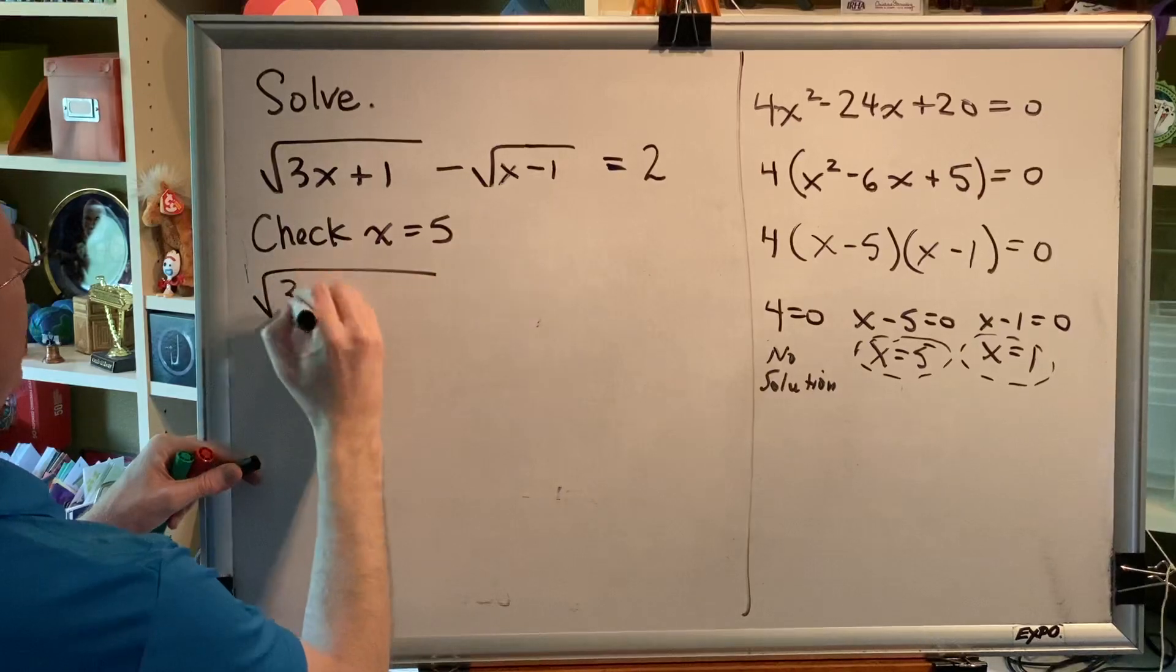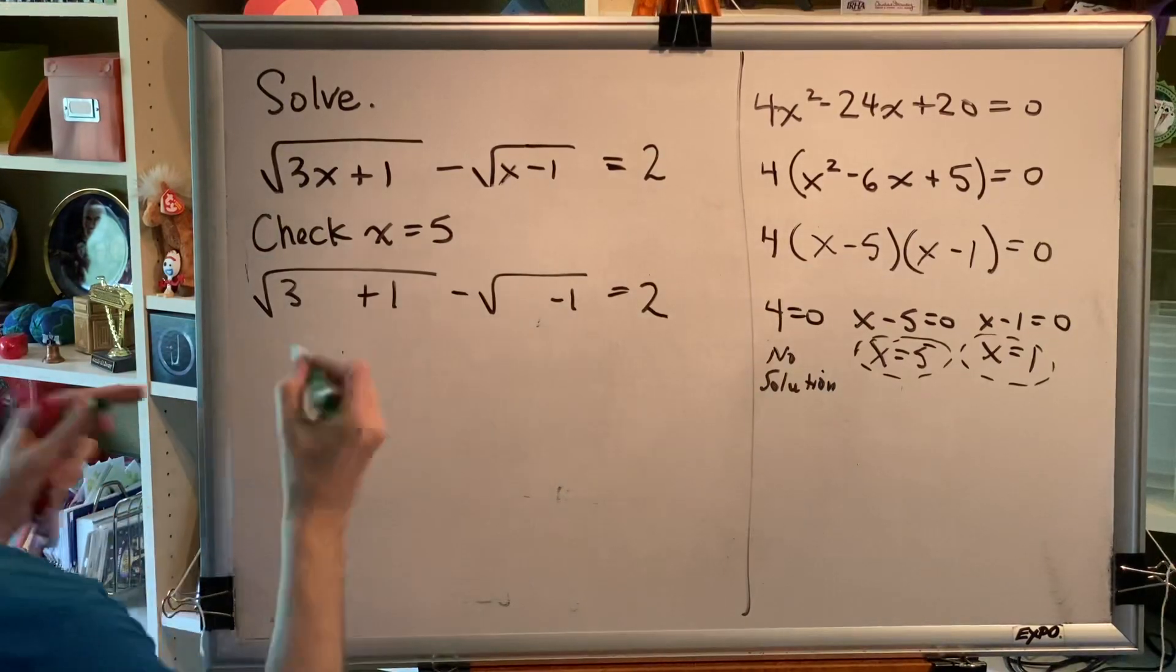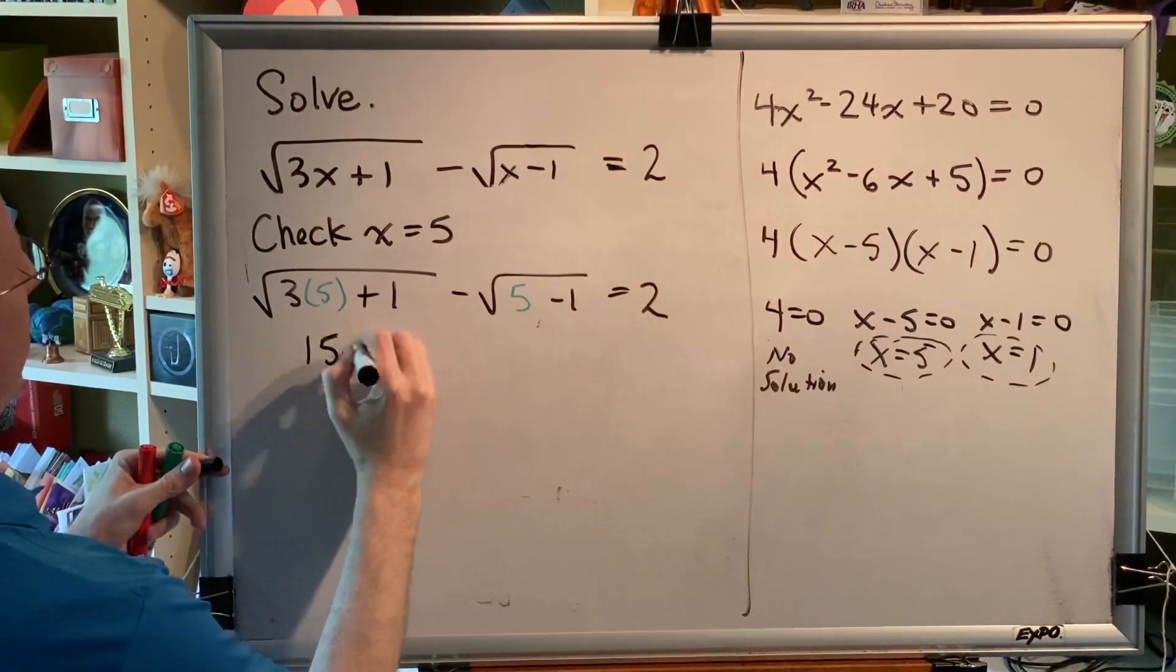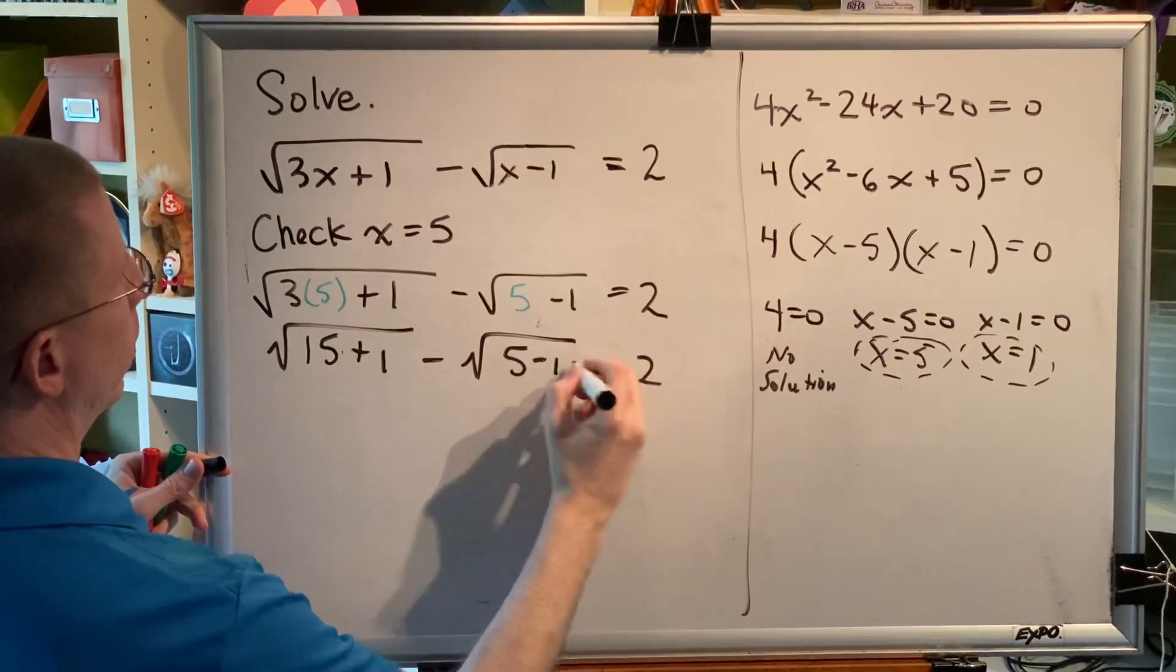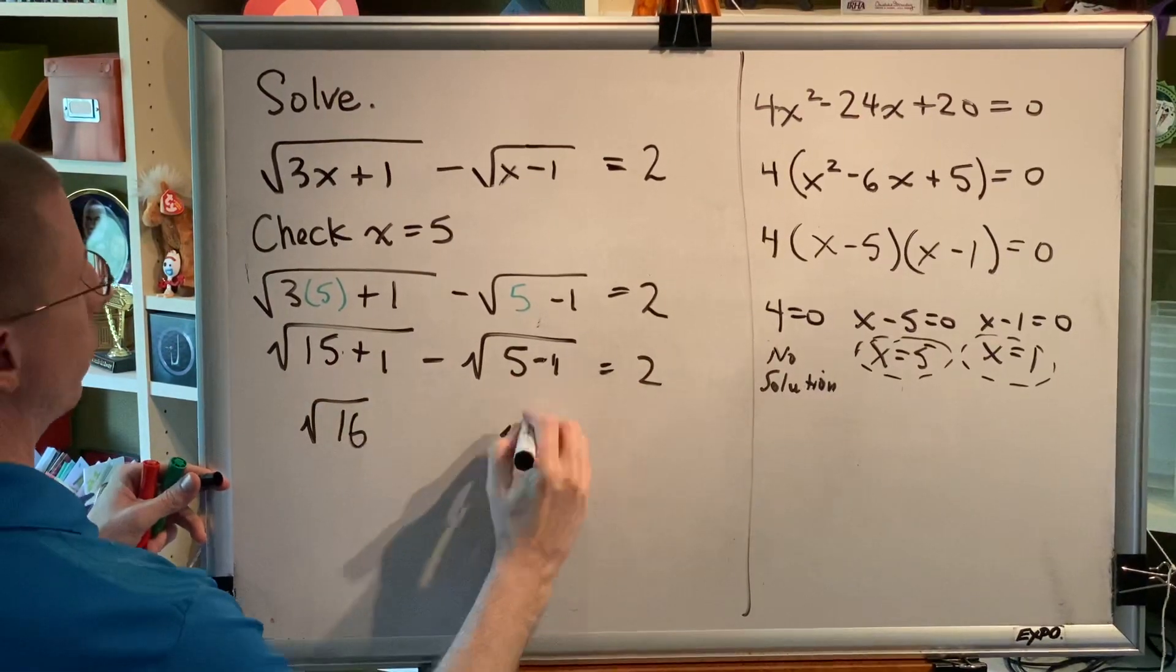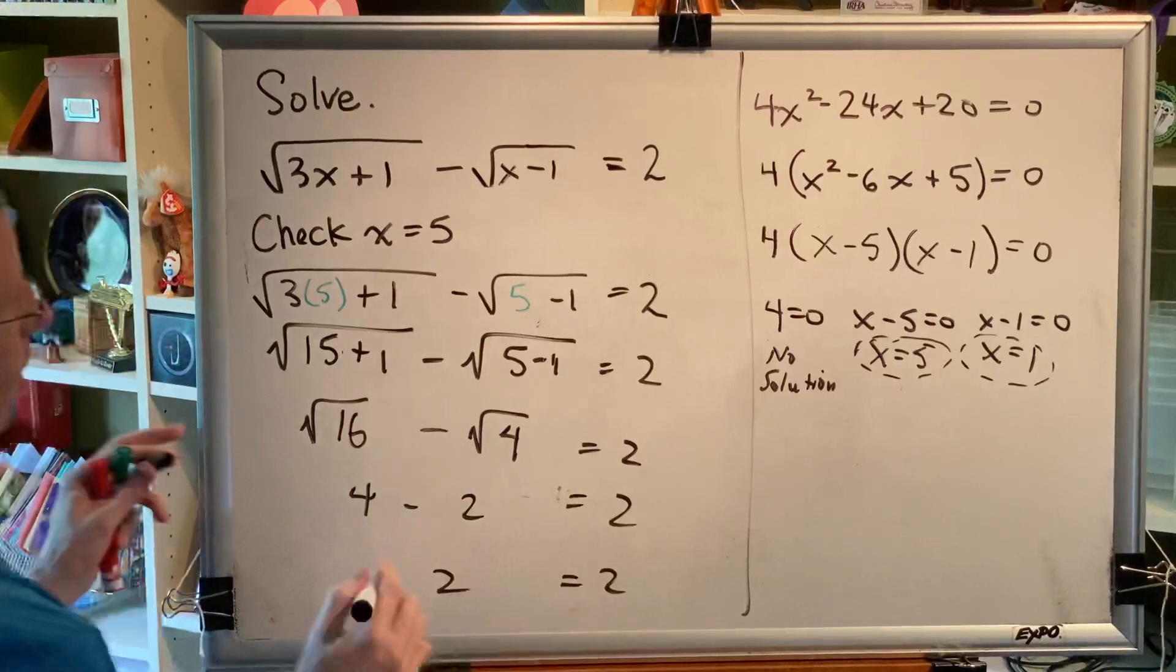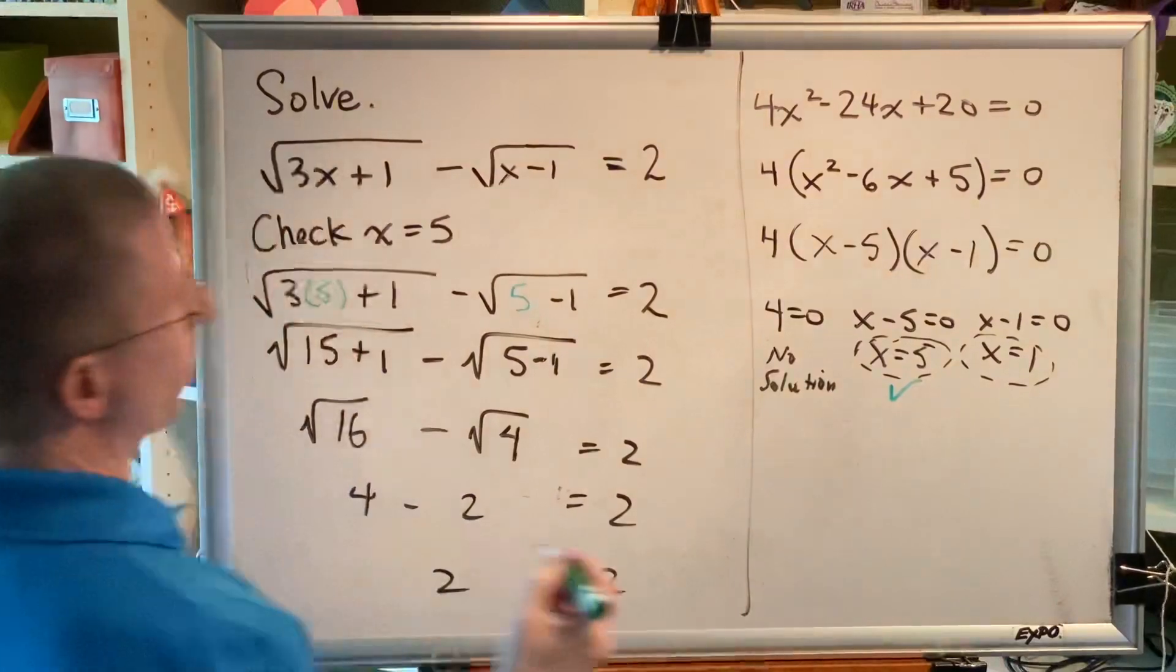So everywhere we see an x, we're going to put 5. And we'll simplify. 3 times 5 is 15. 15 plus 1 is 16. 5 minus 1 is 4. The square root of 16 is 4. The square root of 4 is 2. 4 minus 2 is 2. And those numbers match. So that tells me that 5 is an acceptable solution.